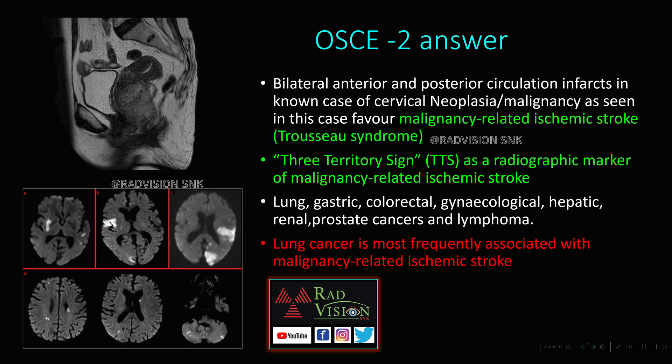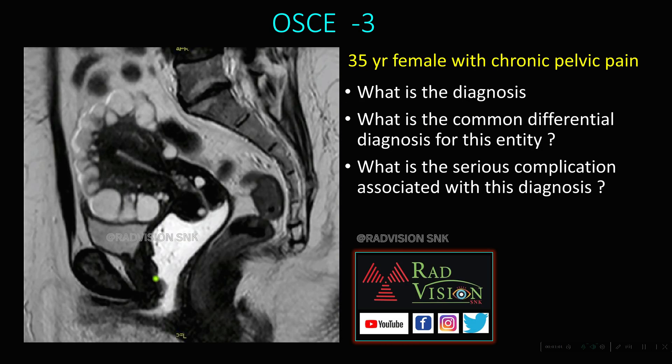The Three Territory Sign is a radiological marker of malignancy-related ischemic stroke. Common pathologies associated include lung carcinoma, gastric, colorectal carcinomas, gynecological carcinomas as seen in this case, hepatic, renal, prostatic carcinoma, and lymphoma. The most frequently associated malignancy with this stroke pattern is lung cancer. Remember the Three Territory Sign as a radiographic marker for malignancy-related ischemic stroke.